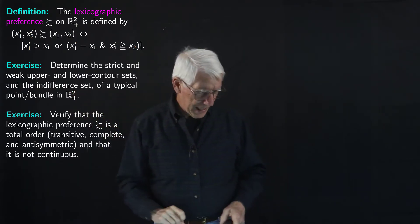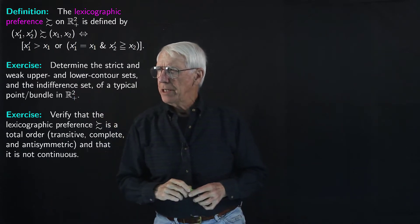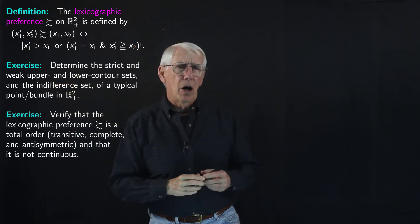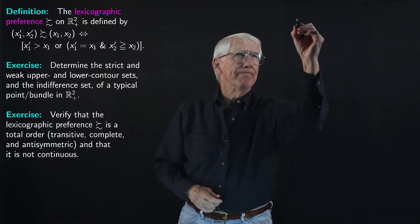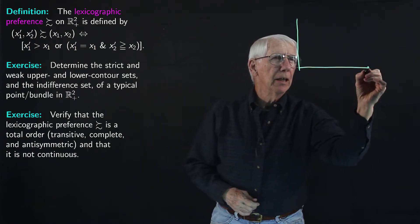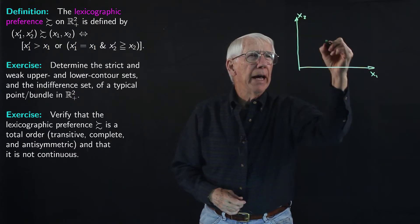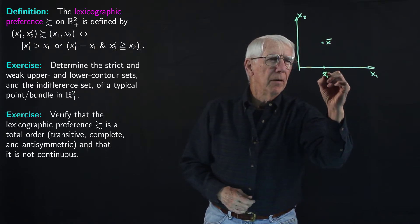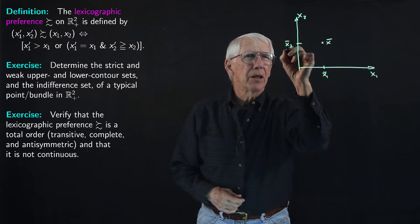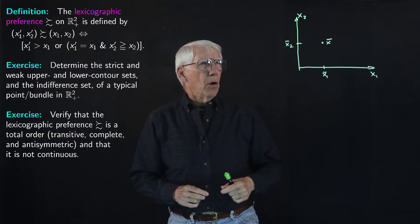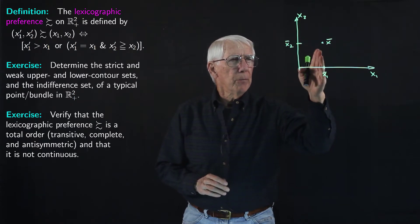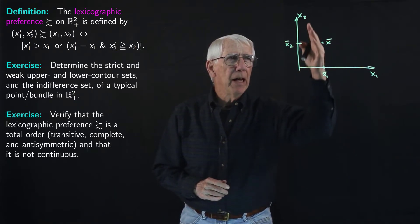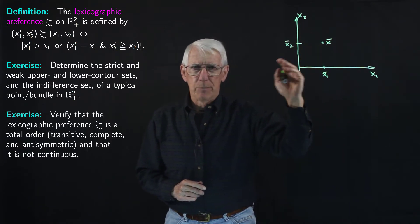Let's get started with that first exercise. What we want to do is take a typical arbitrary point or bundle in R2+, and then find out some things about it. Let's start by drawing R2+ and an arbitrary point in R2+, call it X-bar. There's the first component and the second component of X-bar. Now, what we want to do is determine the strict upper and lower contour sets of X-bar, the weak upper and lower contour sets of X-bar, and the indifference curve or indifference set through X-bar.